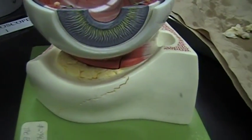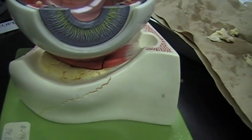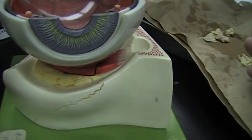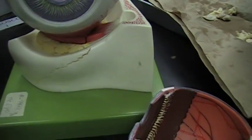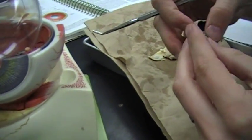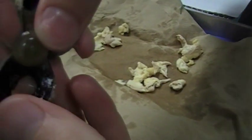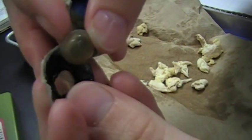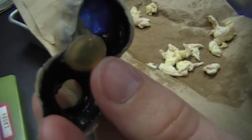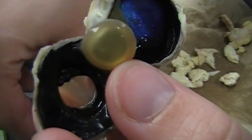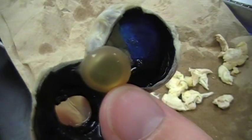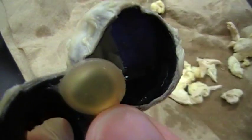Next is the suspensory ligament. It is attached to the ciliary body and holds the lens in the eye's interior. It's clear and it's right here. You can barely see it. But it's just like a ligament. It looks like one. It's very clear and very delicate.